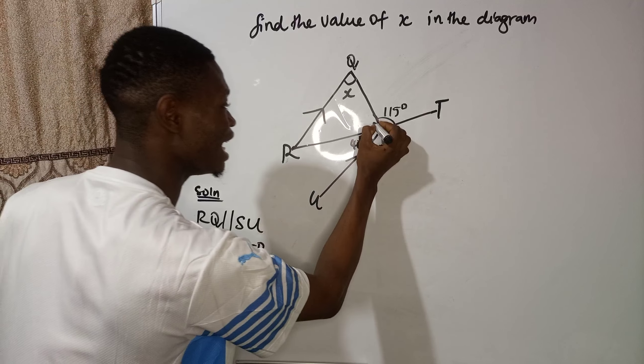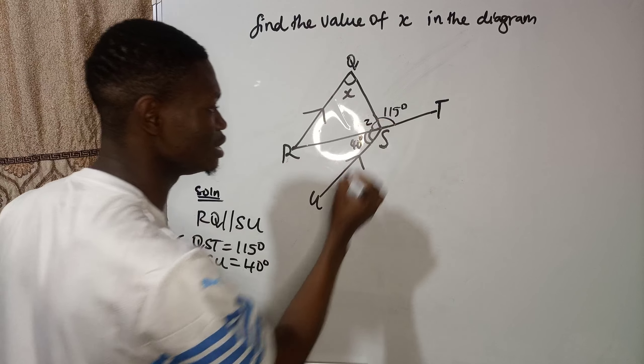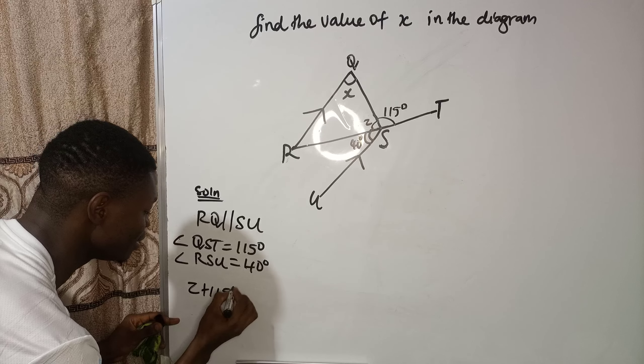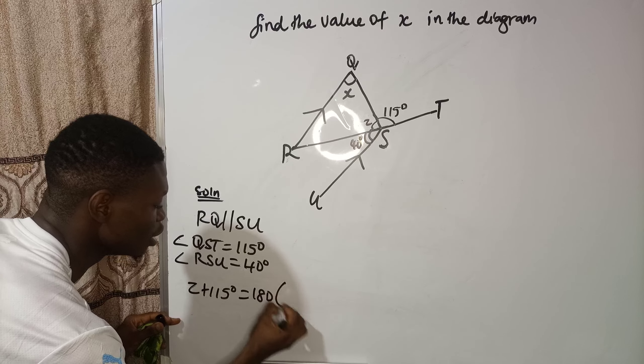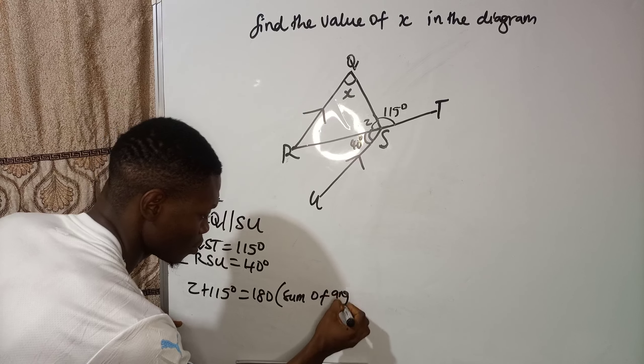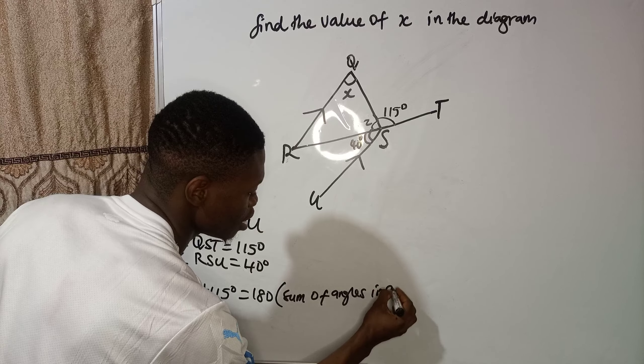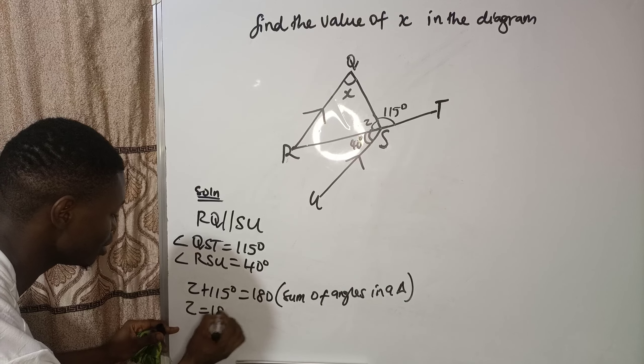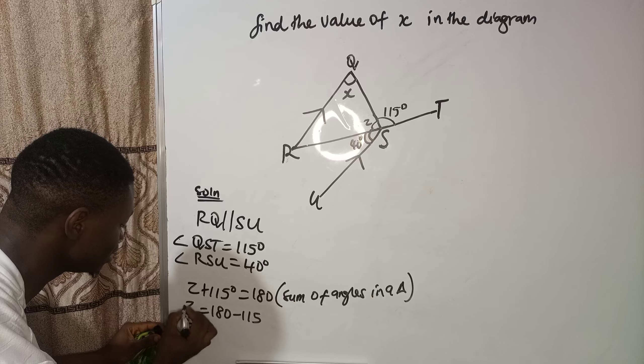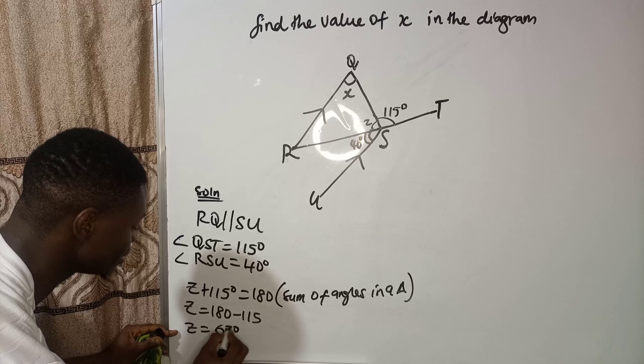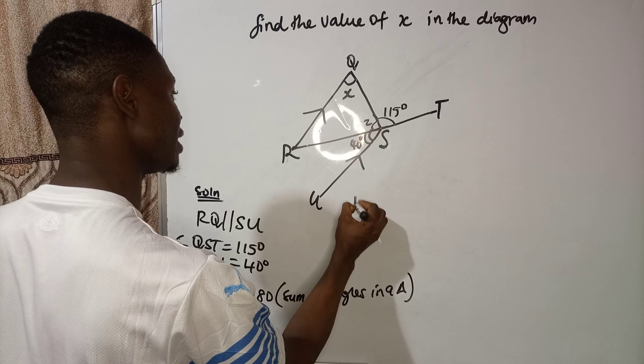Now I can label this space as Z. So I will say that Z plus 115 degrees will give me 180, sum of angles in a triangle. So my Z is equal to 180 minus 115. My Z is equal to 65 degrees.